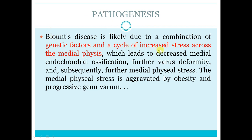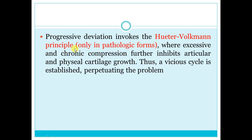Pathogenesis is unknown, but obesity increasing stress in a genetically predisposed child could lead to the Hueter-Volkmann principle. What is the Hueter-Volkmann principle? On the side of compression, the physis doesn't grow; on the side of tension, the physis grows more. But this is not an indication for surgery alone — this principle applies if the child exceeds the physiological limit. If still in physiological varus, Hueter-Volkmann remodeling can occur and bone can remodel.